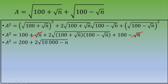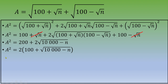We can factor by 2: a² = 2·(100 + √(10,000 − n)). This tells us that a² is an even integer, since it equals 2 times something.